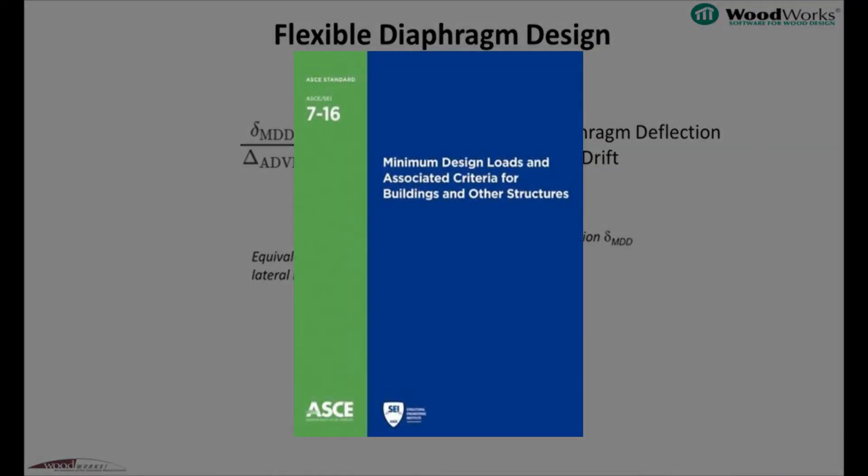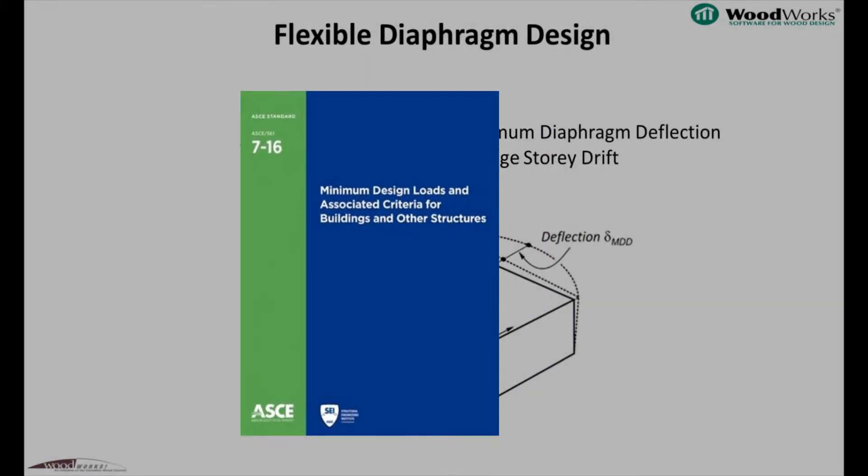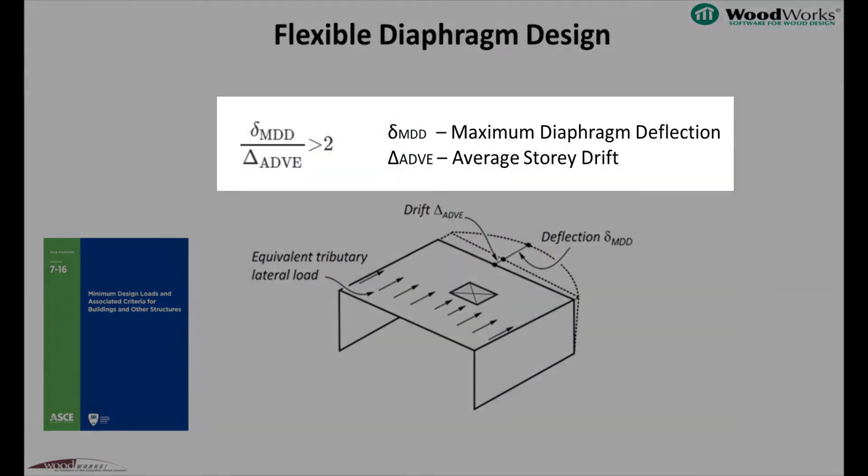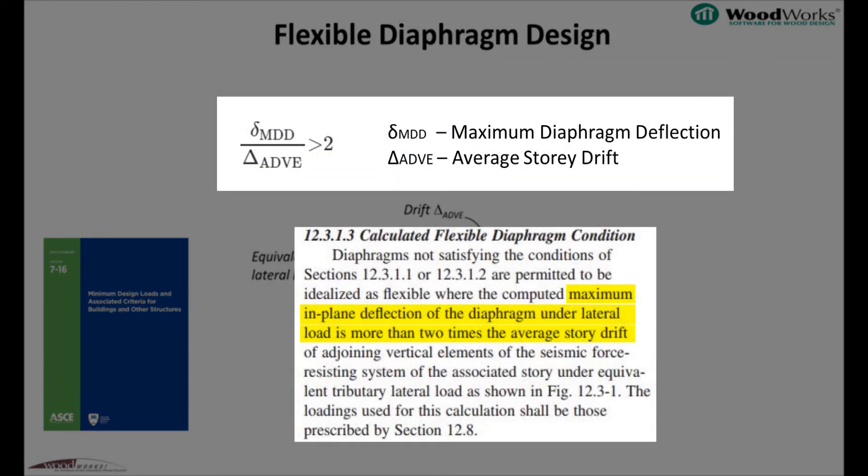ASCE 7-16 provides guidance for when a diaphragm may be idealized as flexible. The equation shown here indicates that if the maximum diaphragm deflection is greater than two times the average shear wall storey drift, then the diaphragm can be idealized as flexible.